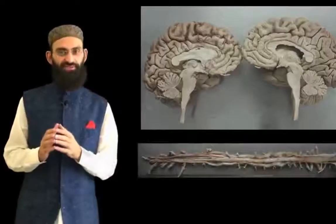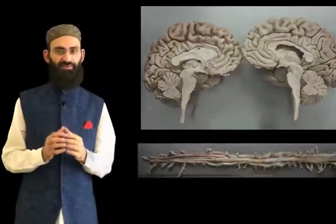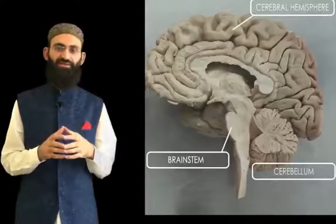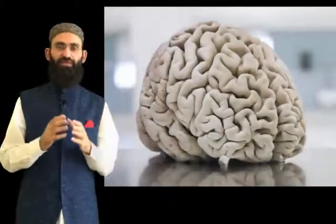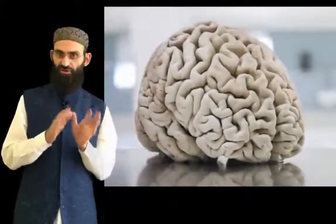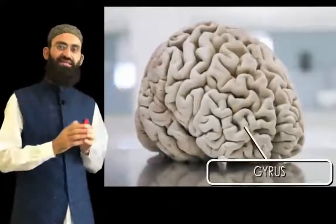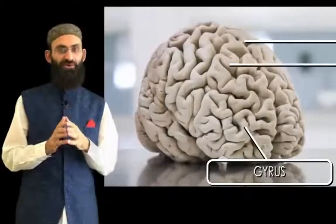The nervous system is divided into central and peripheral nervous system. The central nervous system comprises the brain and spinal cord, while the peripheral nervous system consists of cranial and spinal nerves. The brain consists of cerebral hemispheres, brainstem, and cerebellum. The cerebral cortex is a convoluted structure curved upon itself, consisting of multiple tortuous folds called gyri separated by deep grooves called sulci.